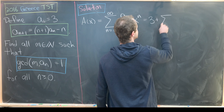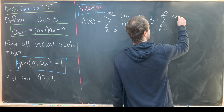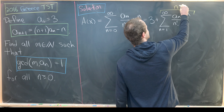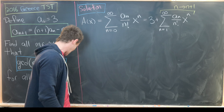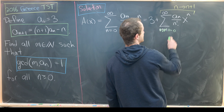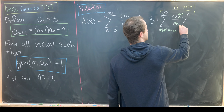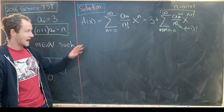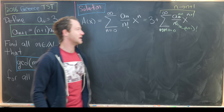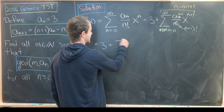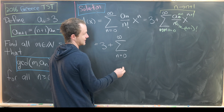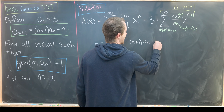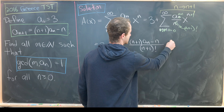Now let's apply our recursion, after pulling out the 0th term. This gives us 3 plus the sum as n goes from 1 up to infinity of aₙ over n! times xⁿ. We re-index by replacing n with n+1, starting at n equals 0, giving us n+1 in the index, (n+1)! in the denominator, and xⁿ⁺¹ in the exponent. Then we apply the recursion to the aₙ₊₁ term, replacing it with (n+1)aₙ − n.